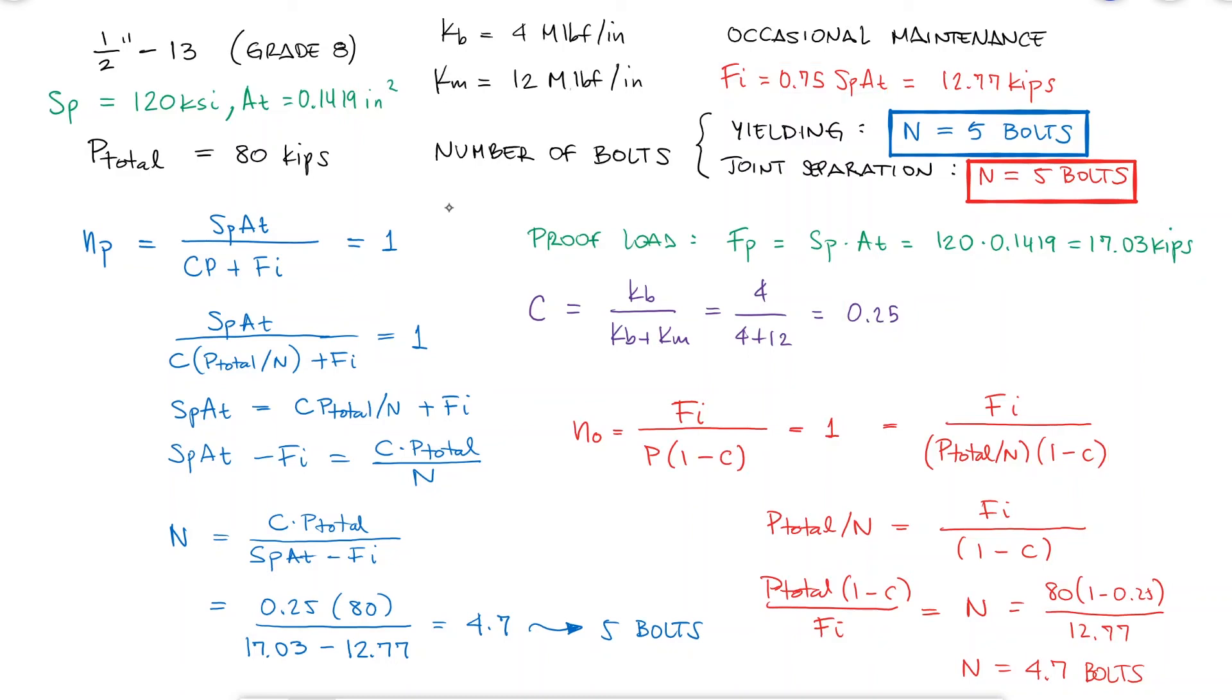If the number of bolts was different for each one of these cases, we would of course choose the answer with the higher number value. Doing this would guarantee that the number of bolts is enough to guard against both yielding and joint separation.